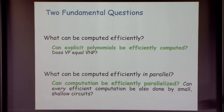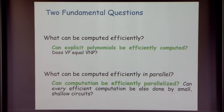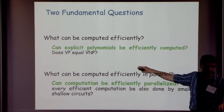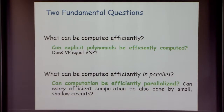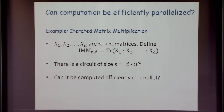There are two basic questions in arithmetic complexity: what can be computed efficiently, and what can be computed efficiently in parallel. Specifically, one aims to understand whether explicit polynomials can have small arithmetic circuits — equivalently, whether the permanent has polynomial-sized arithmetic circuits — and whether computation can be efficiently parallelized.